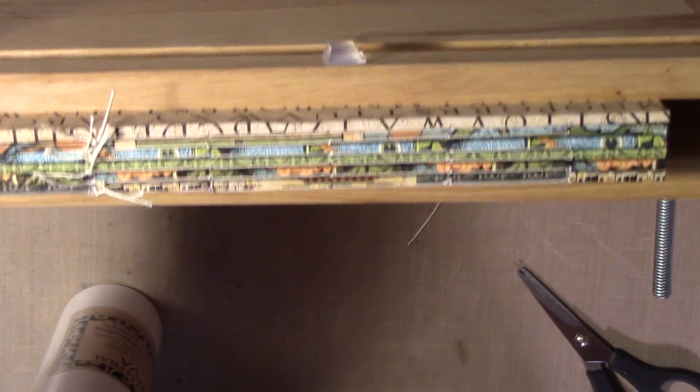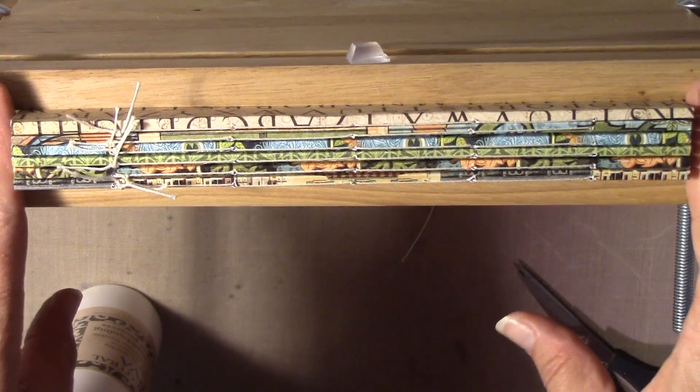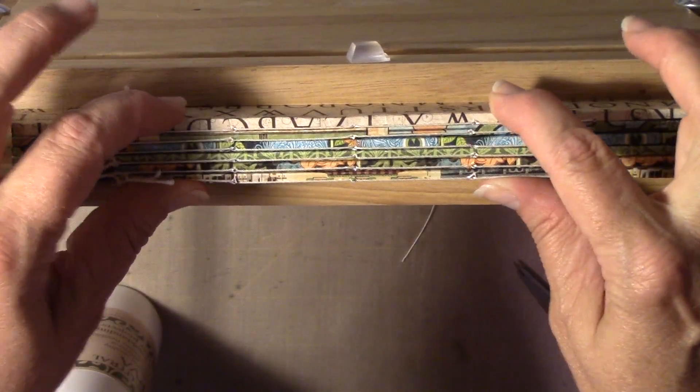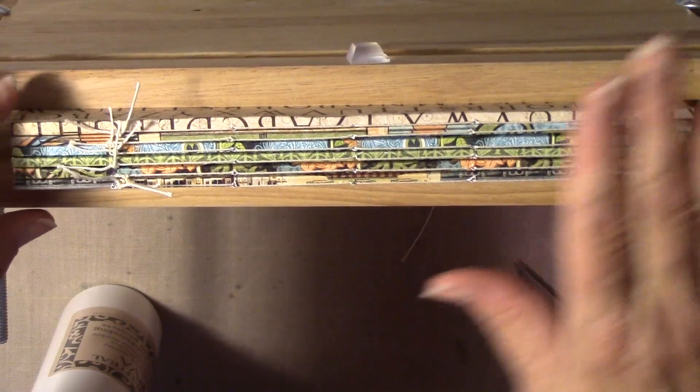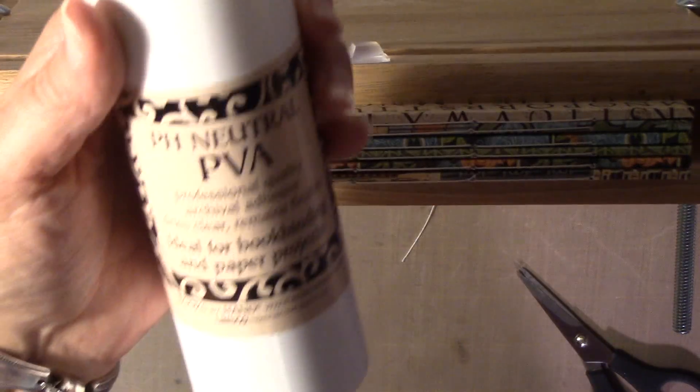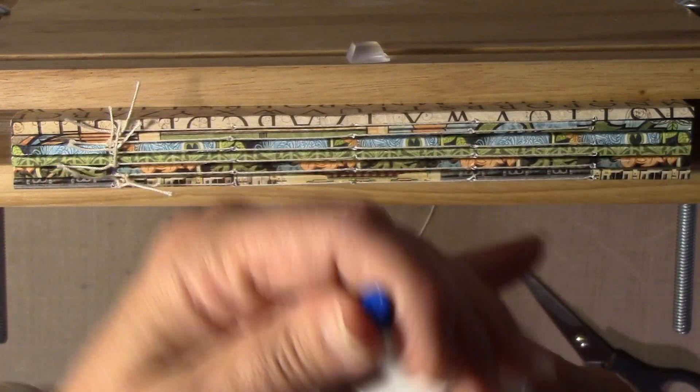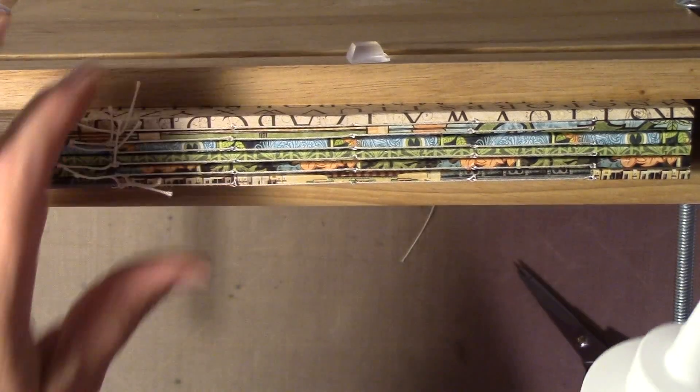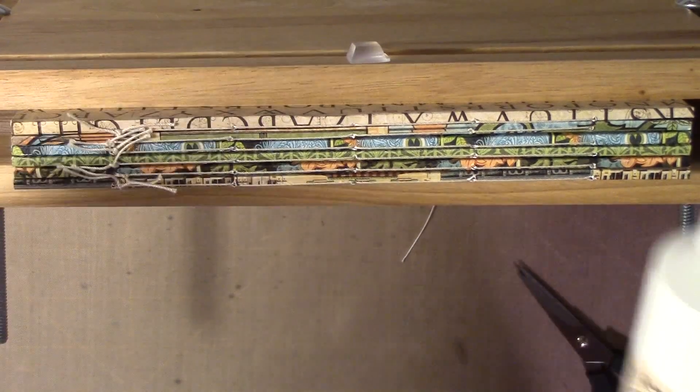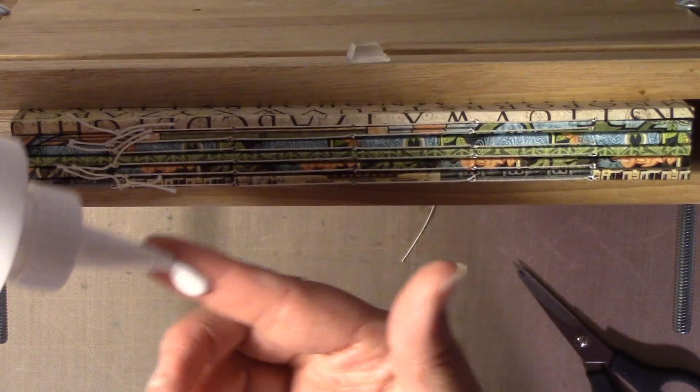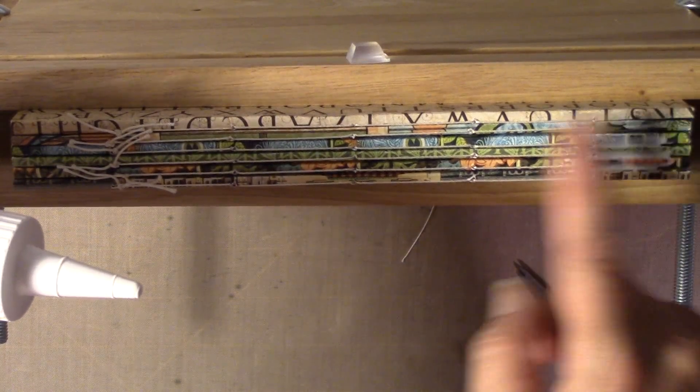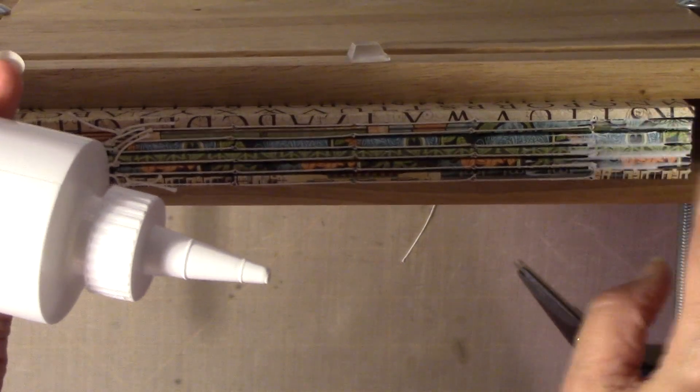So now what we're going to do, I've got them in my book press. I don't have them pinched really hard, just enough to kind of get these together for my first coating. And I finally got some PVA glue - it was a birthday present, so I was very excited to get that. I still use my finger. A lot of people can't stand to get glue on their finger, but it doesn't bother me.